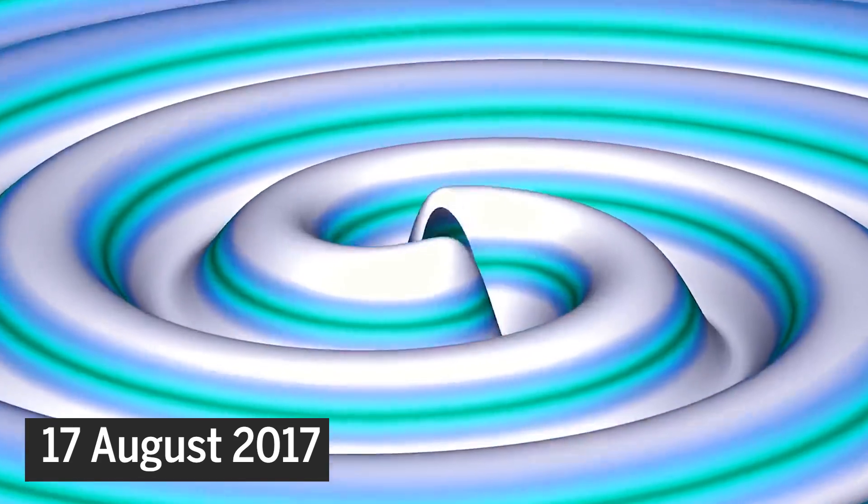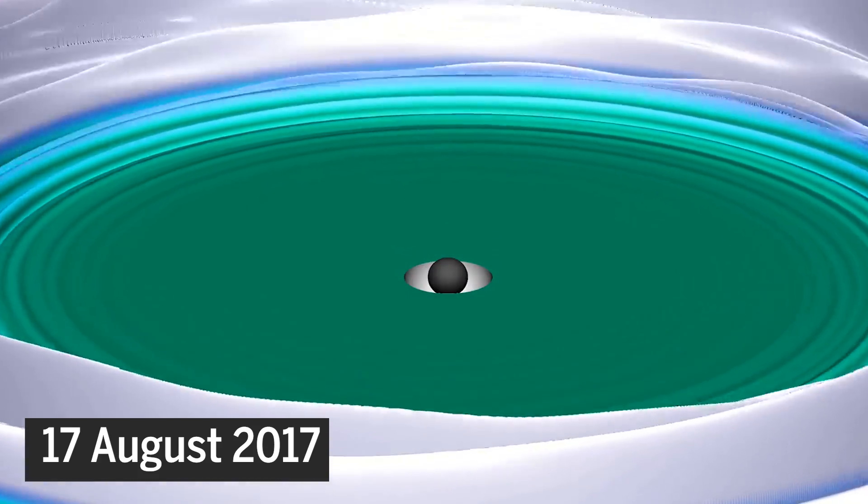On August 17, 2017, the observatory detected gravitational waves from two neutron stars spiraling together and merging.